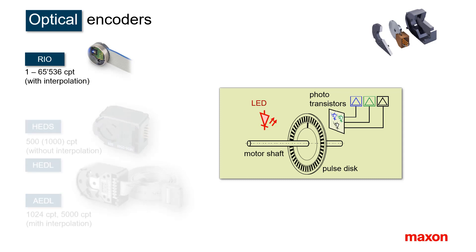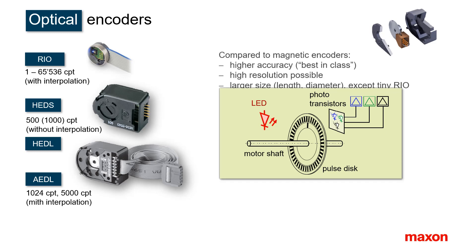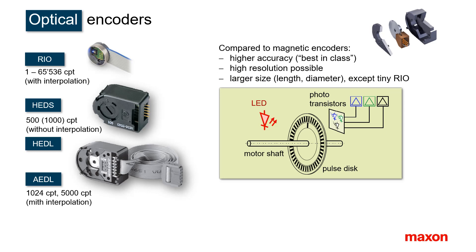Some of the most common encoders on small motors are the HEDL and HEDS encoders, which can be found not only on Maxon motors. The standard HEDL and HEDS encoders used at Maxon have 500 counts per turn. The HEDS is the version without a line driver; HEDL includes a line driver. The AEDL has an even higher resolution of 5000 counts per turn.